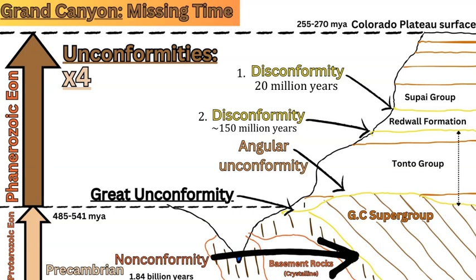The two bottom unconformities are towards the Grand Canyon Supergroup and the basement rocks. The first is the angular unconformity, which is between the Grand Canyon Supergroup — the angled, tilted sedimentary rocks that are between 740 million years and 1.2 billion years old at the base — and the Tonto Group above. This boundary between the Precambrian rocks and the Paleozoic rocks represents the angular unconformity, which can range between 200 to 210 million years of missing time.